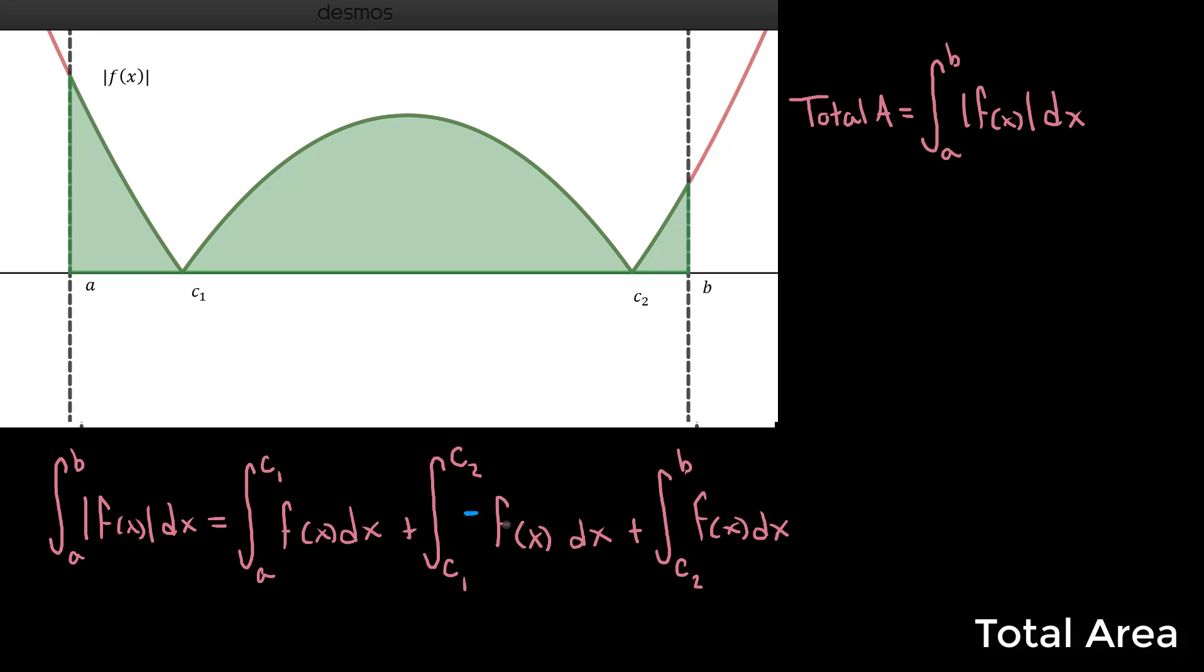And remember with our properties of integrals, if we have a constant times a function when we're integrating, we can go ahead and make that constant multiplied by the integral. So we can make this minus the definite integral from c1 to c2 of f(x) dx plus the definite integral from c2 to b of f(x) dx.